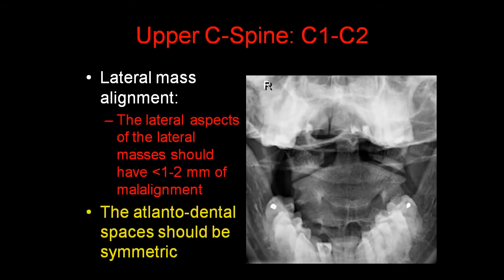On the odontoid view, it's very important to look at the alignment of the lateral masses of C1 and C2. The lateral aspects of the lateral masses should have less than 1-2 mm of malalignment. In addition, the atlanto-dental spaces should be symmetric.